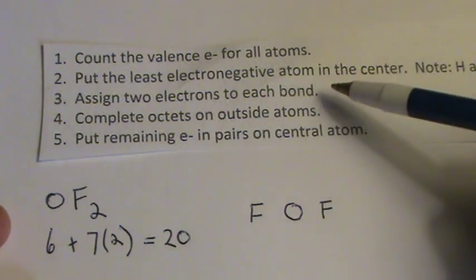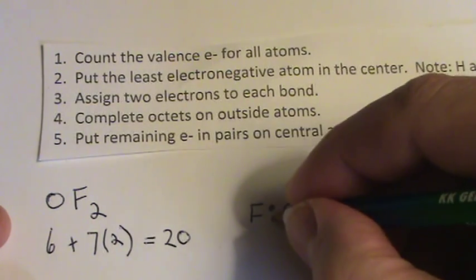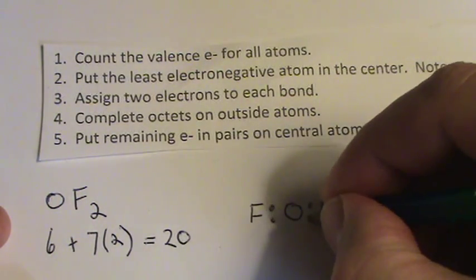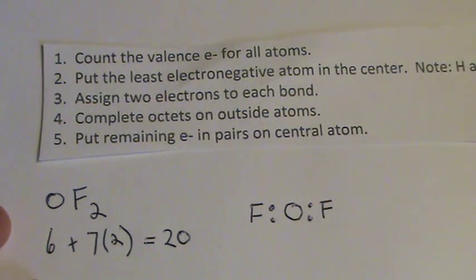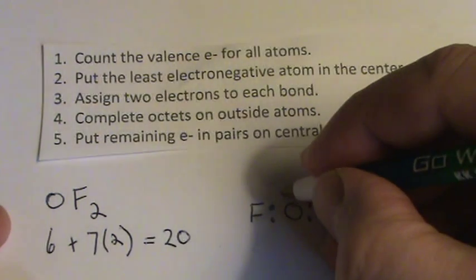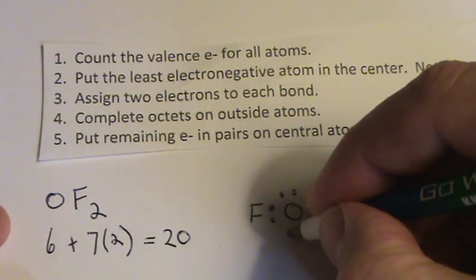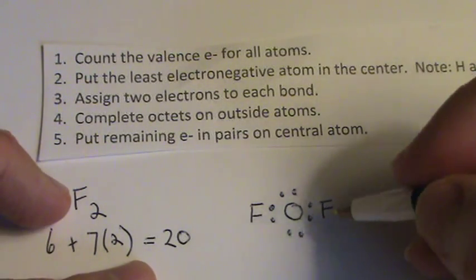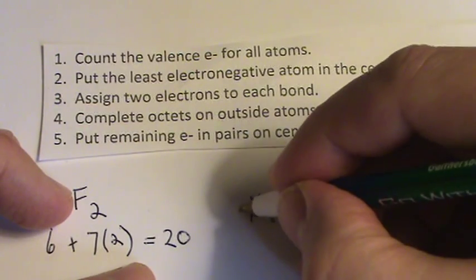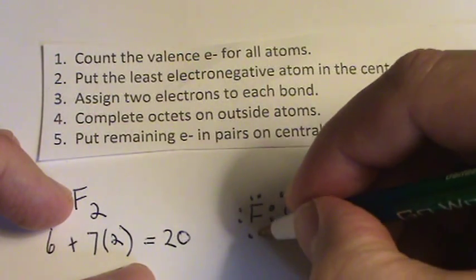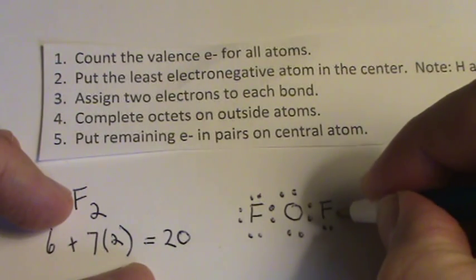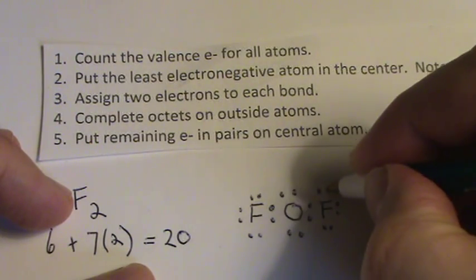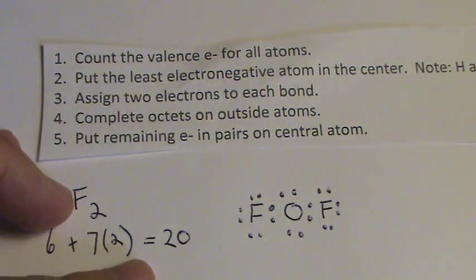So we did that step. We add 2 electrons between each bond. And then we put the remaining electrons around the atoms to fulfill the octet. So I'll start out with the central atom. So I've used 8, which means I need to get 20 total. So 8, 10, 12, 14, 16, 18, 20. I used up all my electrons.